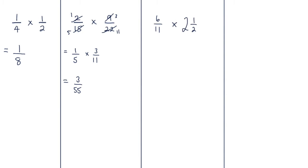For question three, we've got six over eleven — that fraction is already in its lowest form — multiplied by two and a half. We have a mixed number here, so we need to convert it to an improper fraction. We take the whole number and multiply it by the denominator: two times two is four, plus one, that's five. So it becomes five over two.